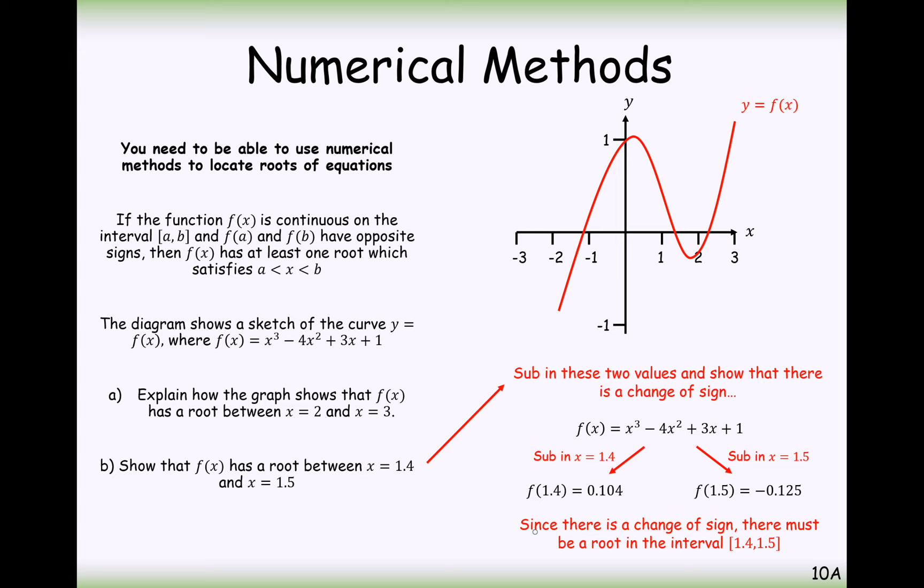But you're going to have to explain that when you write your answer. You're going to have to write a concluding sentence along the lines of, since there is a change of sign, there must be a root in the interval from 1.4 to 1.5. We can see here the graph is obviously continuous, so you may want to add that in as well. As F of X is continuous, and we have seen a change in sign, there must be then a root in between 1.4 to 1.5. So that conclusion is worth a whole mark in and of its own, so make sure you don't miss that.